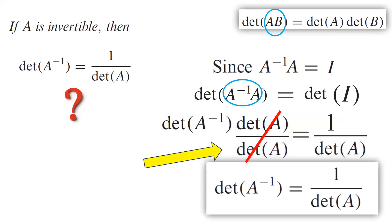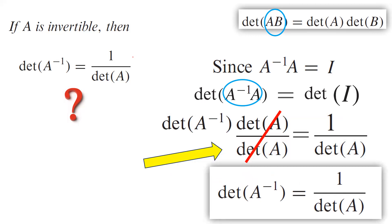So you end up having the determinant of A inverse as 1 over the determinant of A.